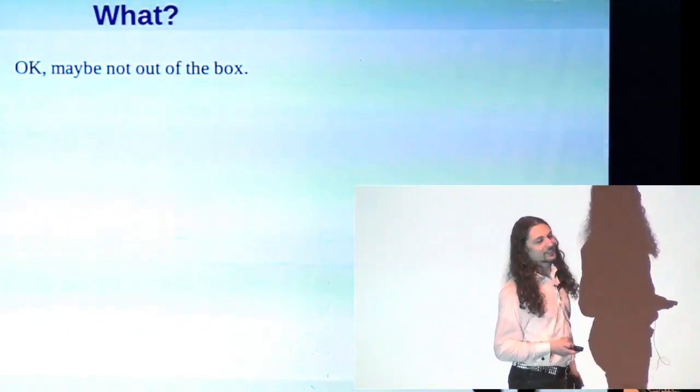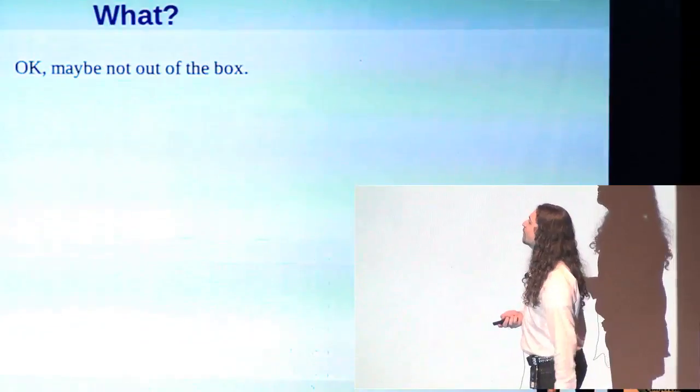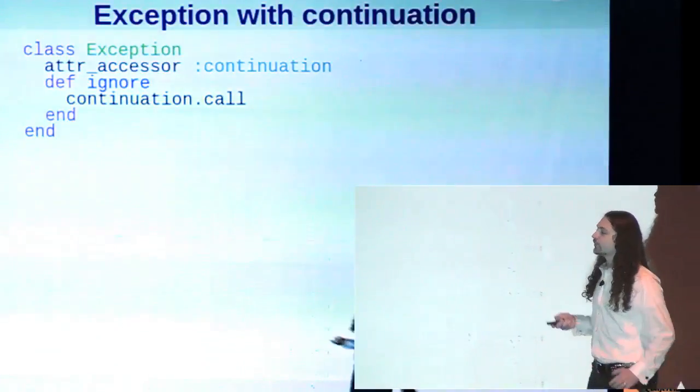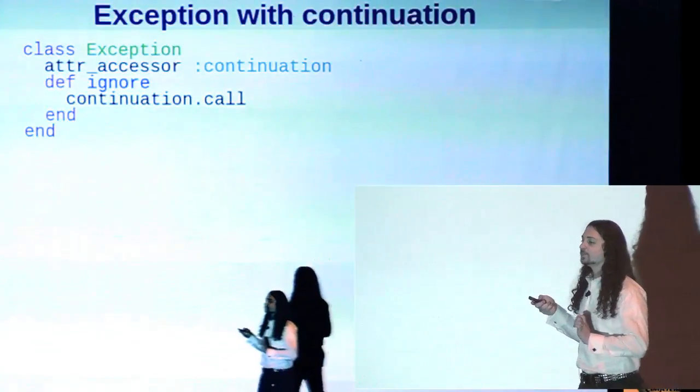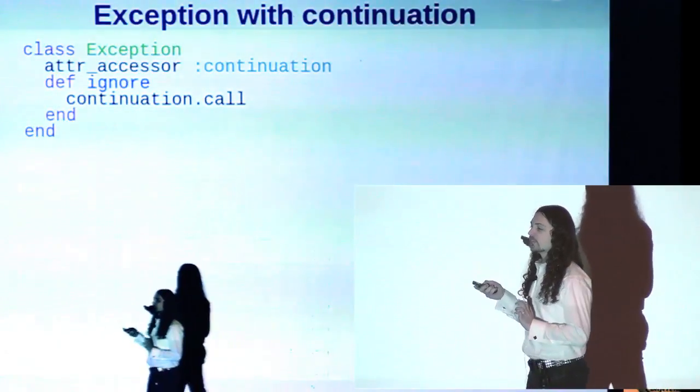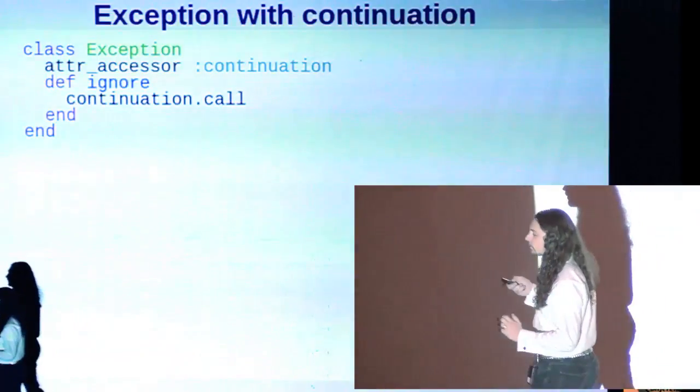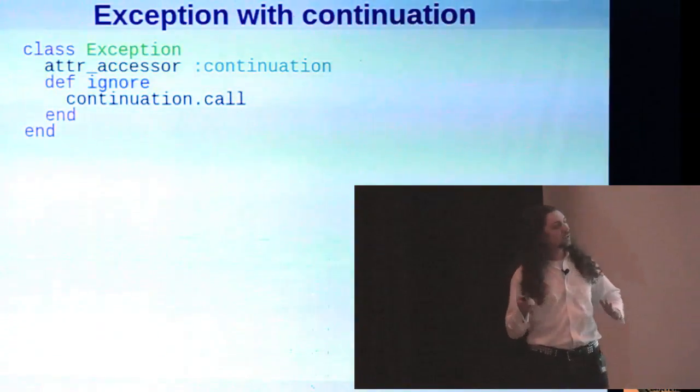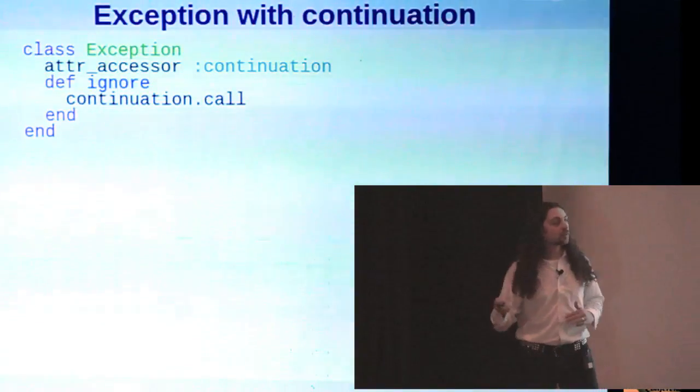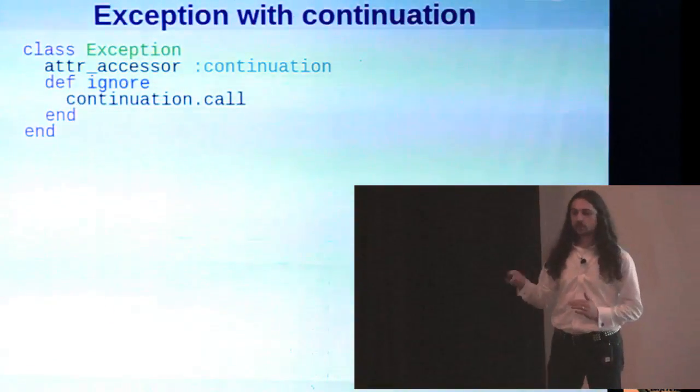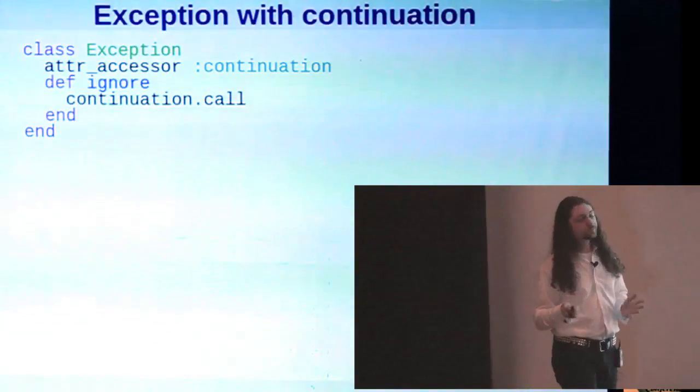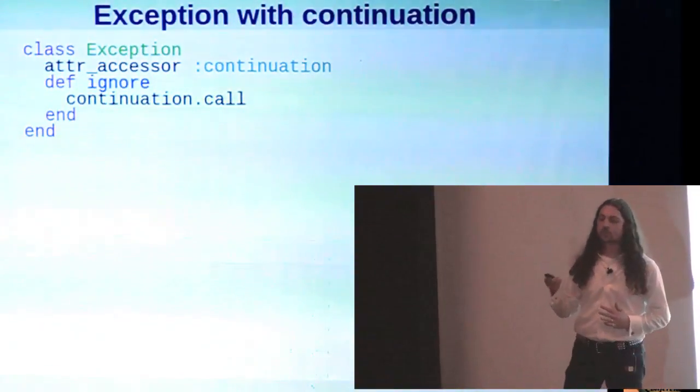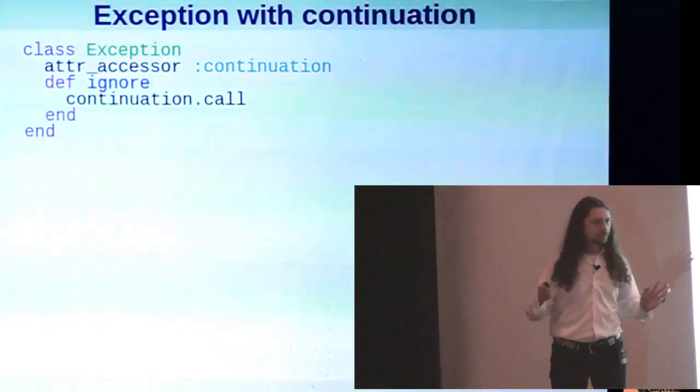Now some of you are probably going, wait a minute, that's not in Ruby. All right, so I lied. But it's not that hard to implement. We'll start with a modification to the exception class, the base exception class, and we're just gonna add an attribute to it which will hold a continuation. And we'll get into what a continuation is in a minute. And then we're gonna define this ignore method which will simply call the continuation. So keep that in your mind.